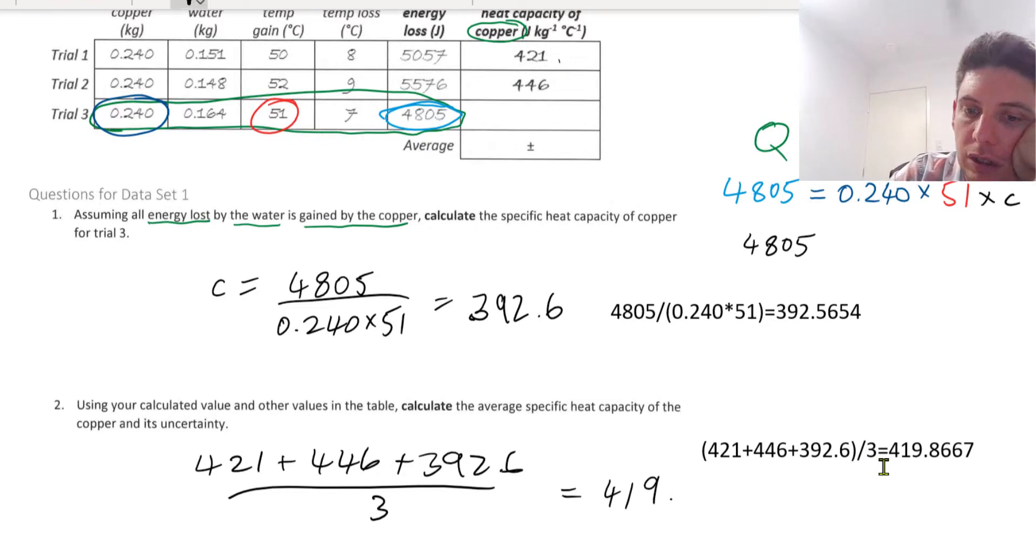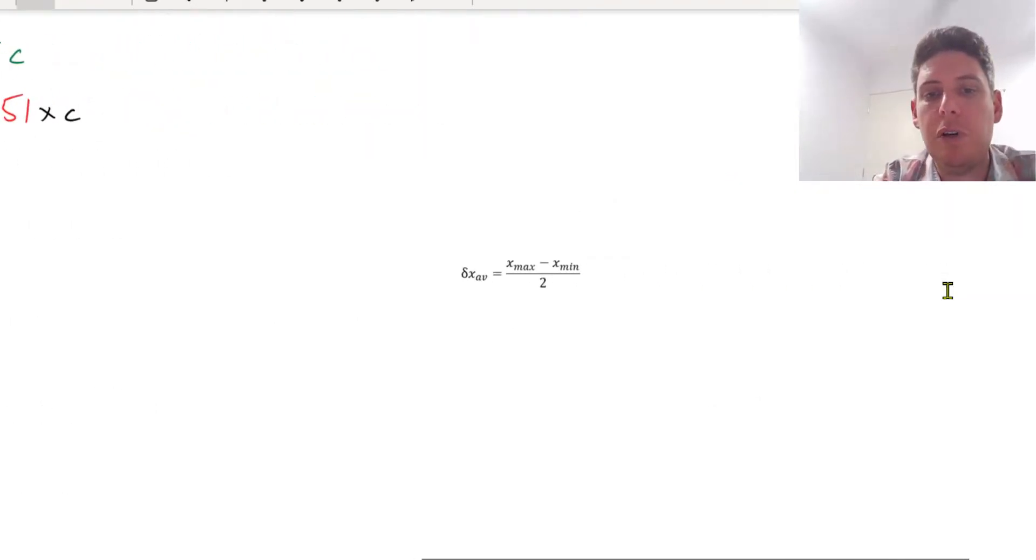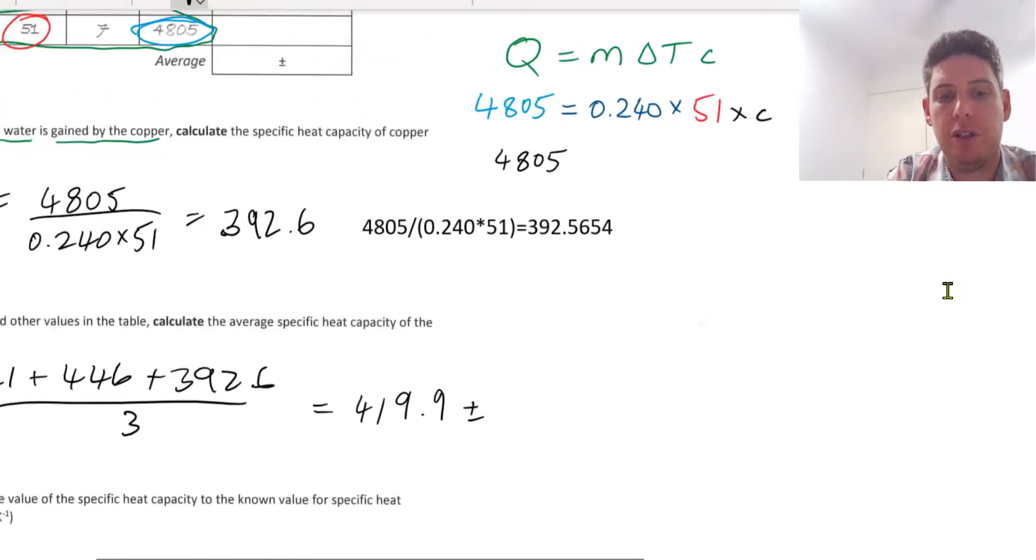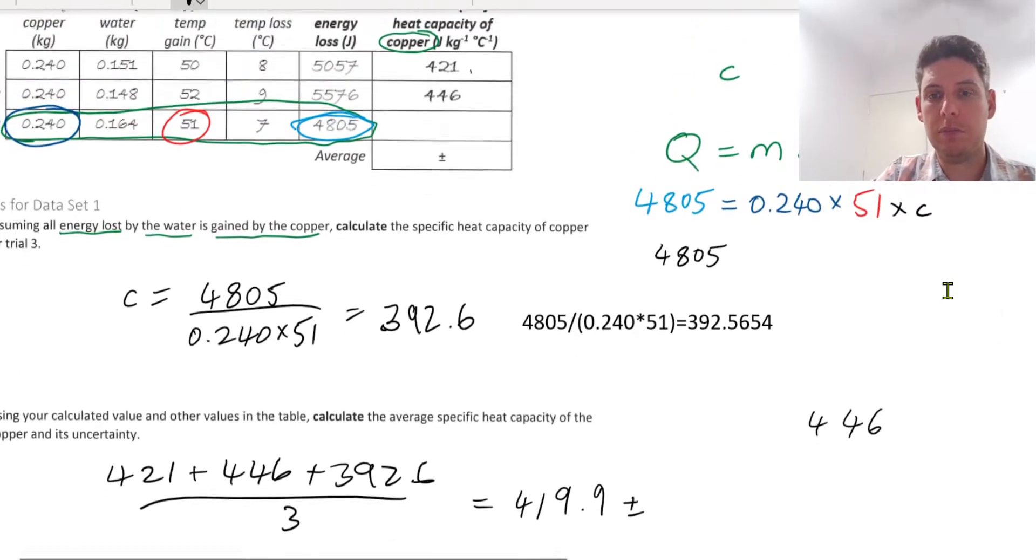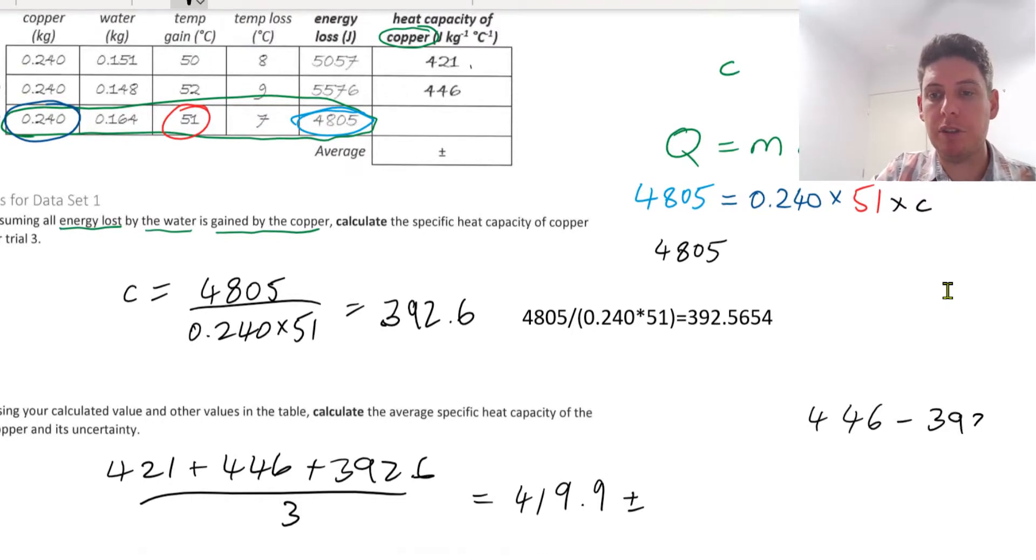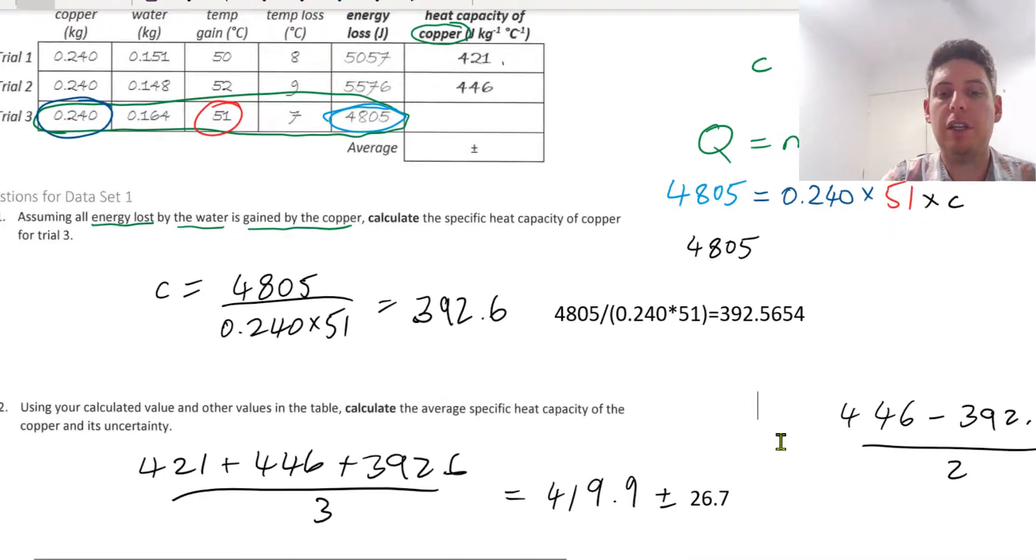419.9, because we're going to one decimal place. Now we need to calculate the uncertainty. So if you're not familiar with uncertainty, the uncertainty is the maximum minus the minimum divided by 2. So this plus or minus around that average would be the maximum minus the minimum, which we just calculated, divided by 2. Which is 26.7. So there's your answer.